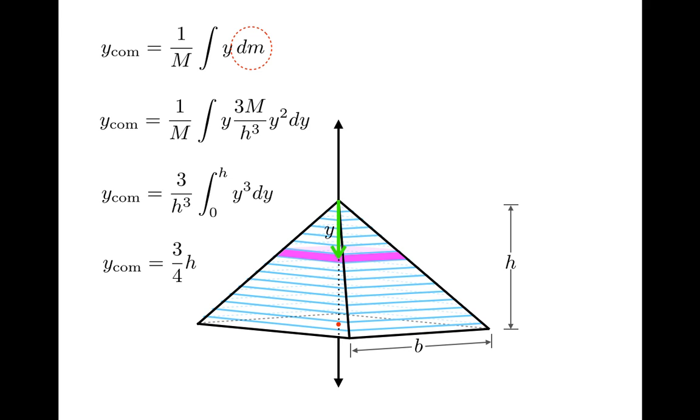Now remember, this is measuring the distance from the apex to the center of mass, which is here. Typically, the center of mass would be given as one-fourth h from the base of the pyramid, and either way is perfectly fine.